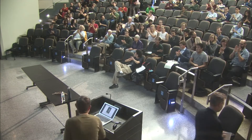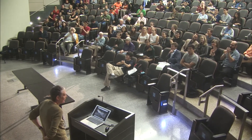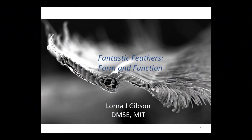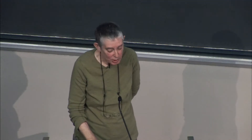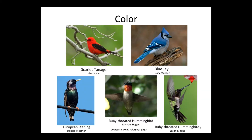Thank you. I'd like to talk today about feathers. This really combines my interest in material science but also my interest in bird watching. I call this 'Fantastic Feathers: Form and Function' — the form is the structure of the feathers and the function is their properties. When we think about birds, we think about their feathers. The feathers provide the color — say the red of the scarlet tanager or the blue of the blue jay. The feathers provide iridescence in some birds, like starlings or hummingbirds.